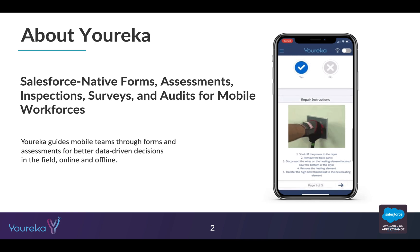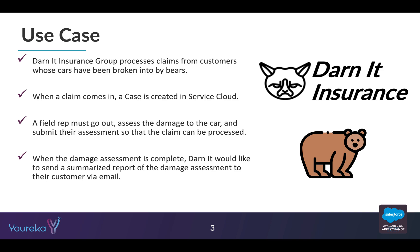When they return to connectivity, the data gets sent back up to Salesforce. So let's talk about the use case for today's tutorial. I'm going to pretend I work for a company called Darnit Insurance — you can see their logo in the top right corner. Darnit Insurance processes claims from customers whose cars have been damaged, specifically broken into by grizzly bears or brown bears — quite a niche market.